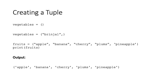In the third line, we are creating a tuple by the name 'fruits' with five elements: apple, banana, cherry, plums, and pineapple. Then we try to print the elements of the tuple — we pass the tuple 'fruits' as an argument to the print function. The output you get is apple, banana, cherry, plums, and pineapple, as shown at the end of the figure.